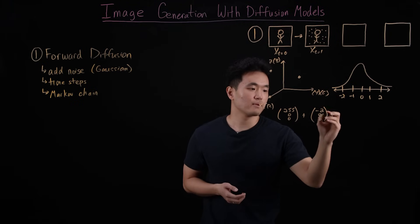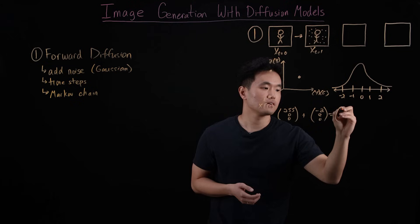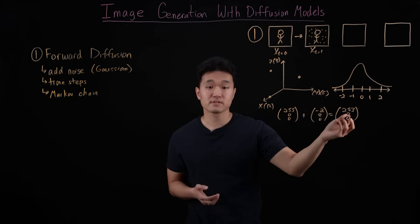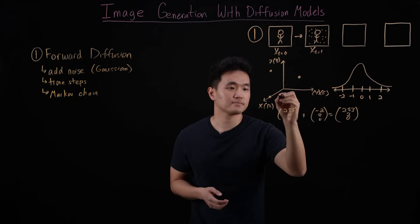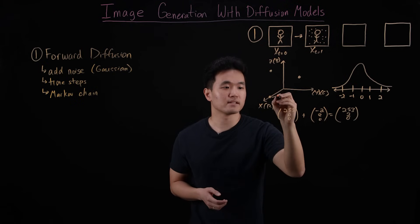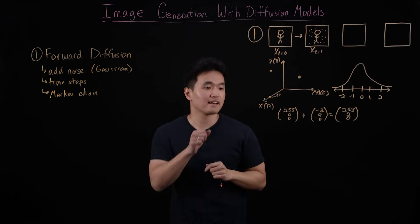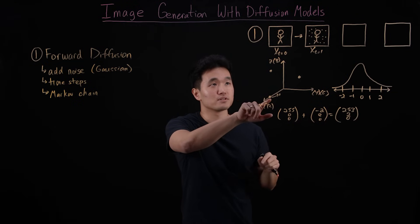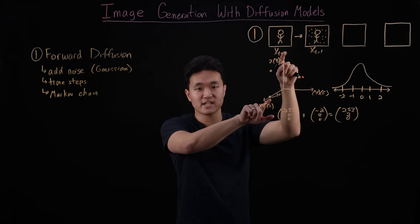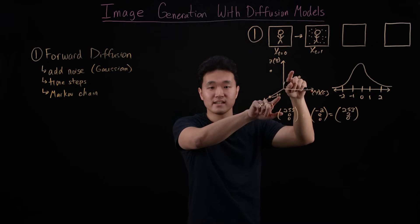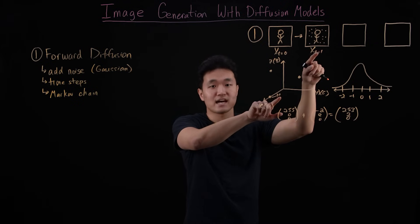Adding these together, what we get is a new pixel with color values 253, two, zero, and we can represent this new color on our plane here, and show the change in this color with an arrow. So what just happened, basically, is that this pixel that was pure red in the original image at time zero has now become slightly less red in the direction of green at time t equals to one.